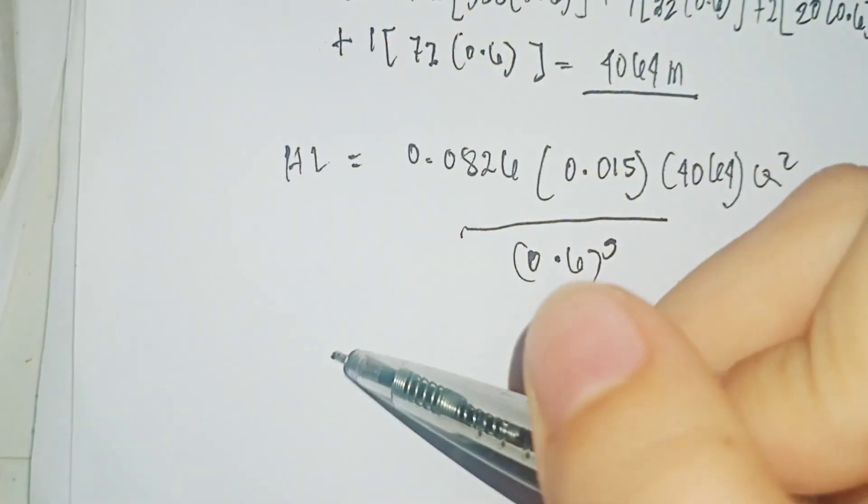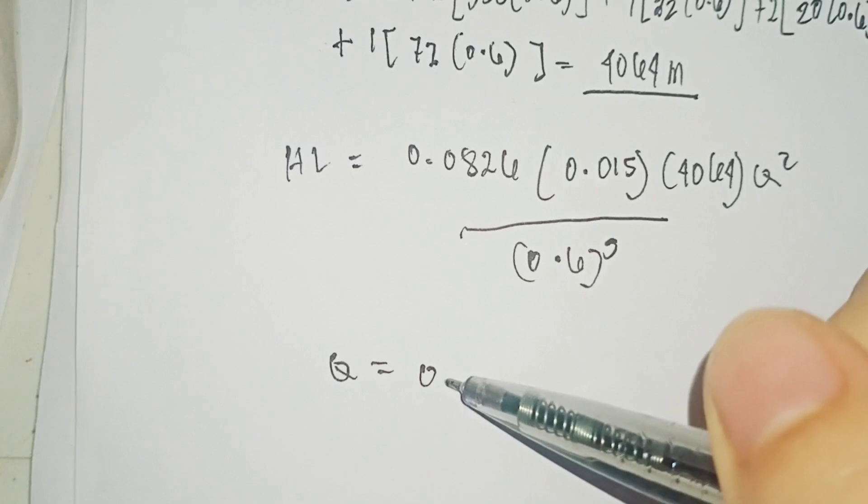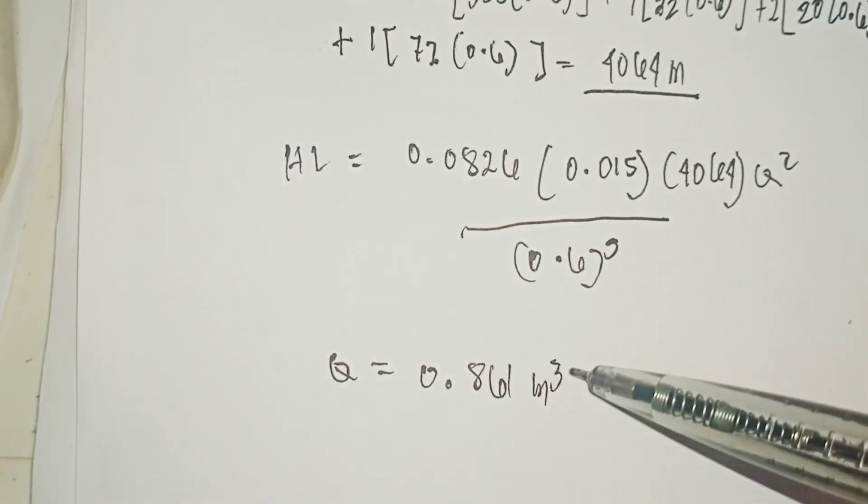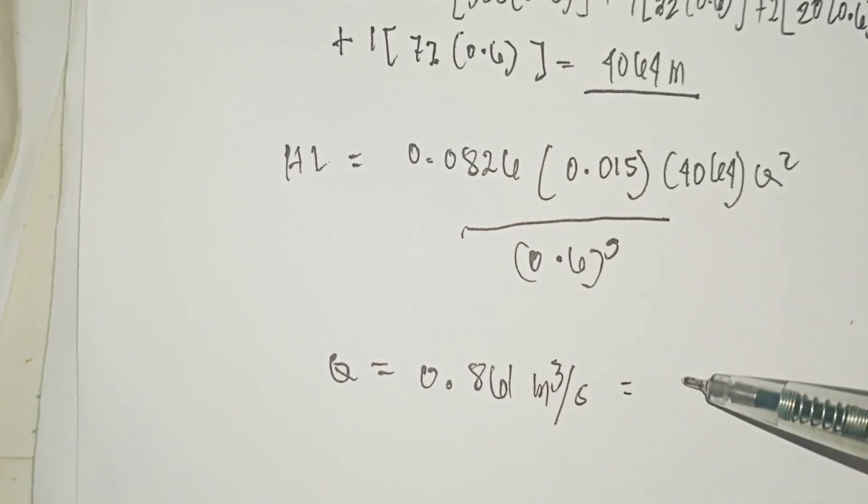And the final answer is 0.861 cubic meters per second or 861 liters per second.